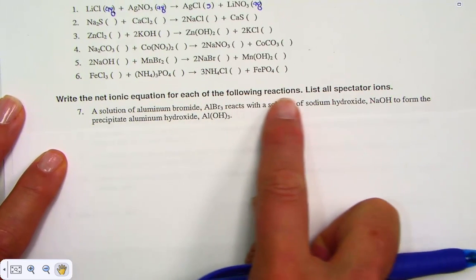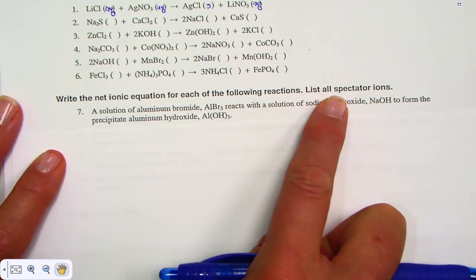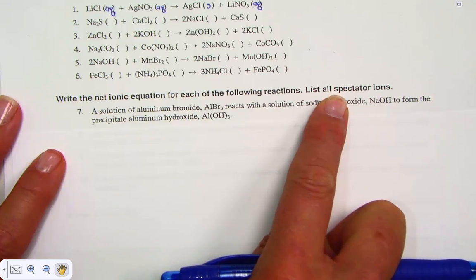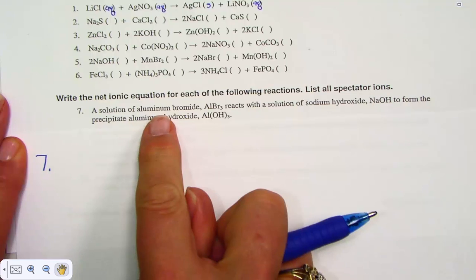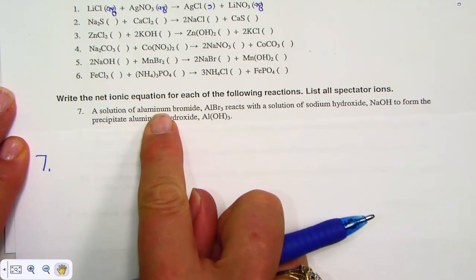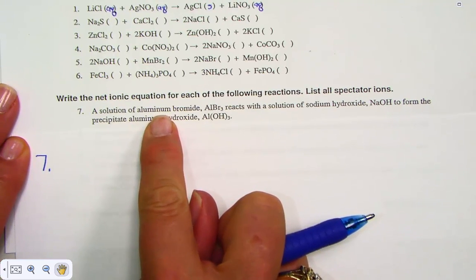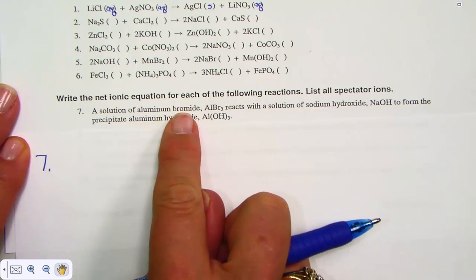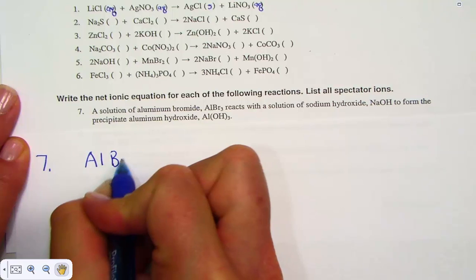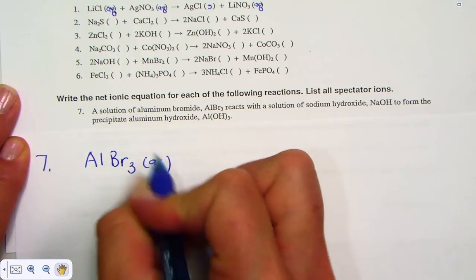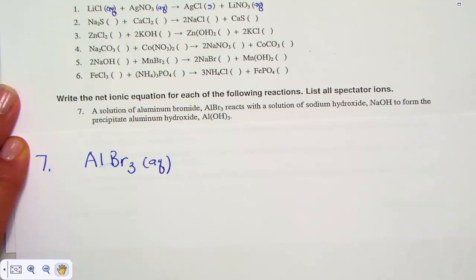Write the net ionic equation for each of the following, indicating the spectator ions. So this really is no different, except now I'm more challenged by taking the words into a balanced equation first. A solution of aluminum bromide, I would represent that by AlBr3. Dissolved in water is AQ—that's the solution part of it.